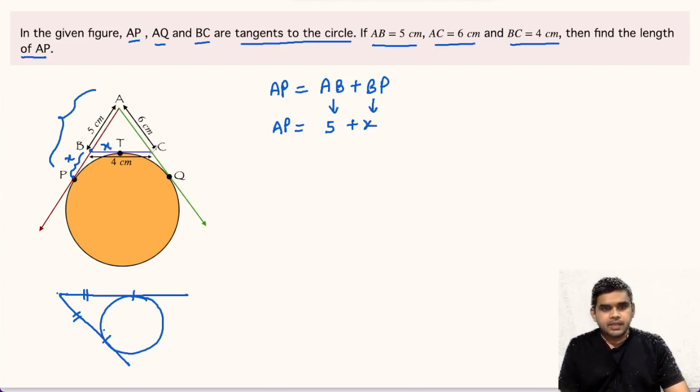Likewise, let us apply this theorem taking point C as the external point. Length CQ will be equal to CT. Let us assume CQ as Y, so CT will also be equal to Y.